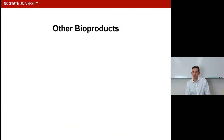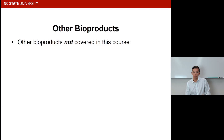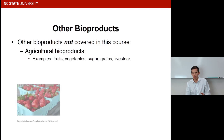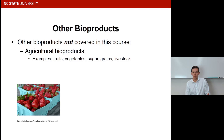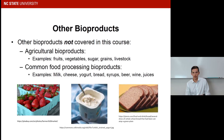It's important to talk about some of the bioproducts that will not be covered in this course. Most people don't really think of agricultural products as bioproducts, but they technically are — they fall under the umbrella of the bioeconomy. They include fruits, vegetables, and sugars. Another bioproduct we won't be touching on much are food processing bioproducts — the downstream products of processing agricultural products, such as milk, cheese, yogurt, and bread.